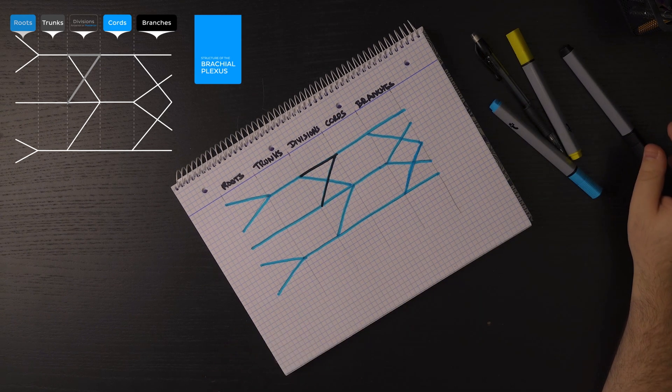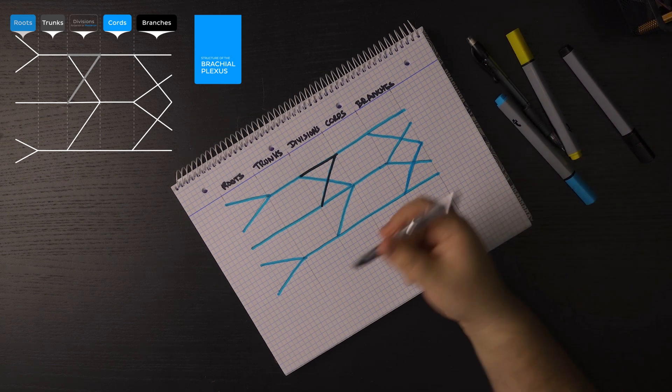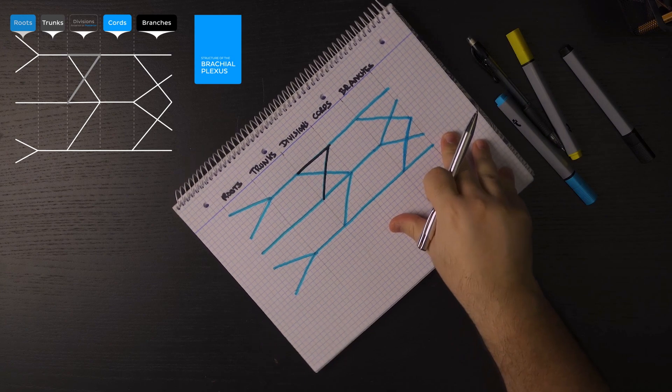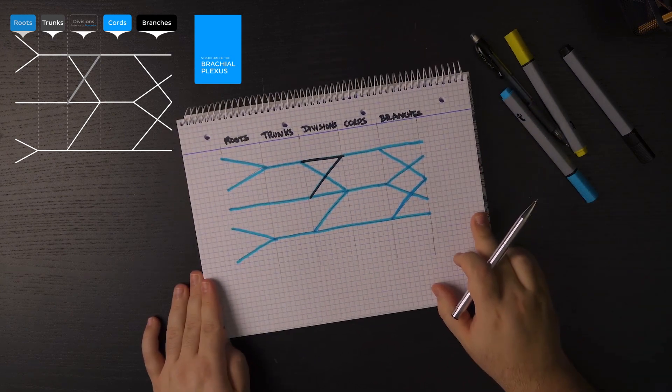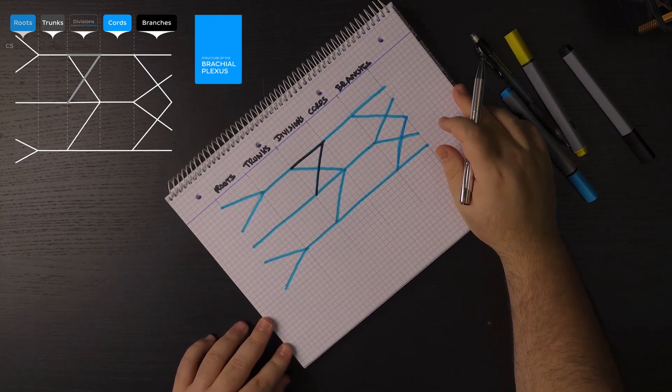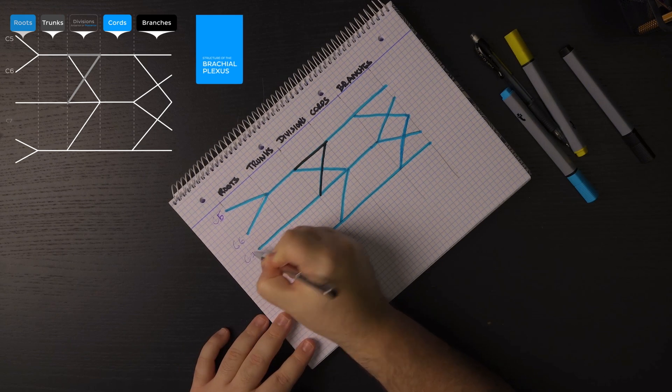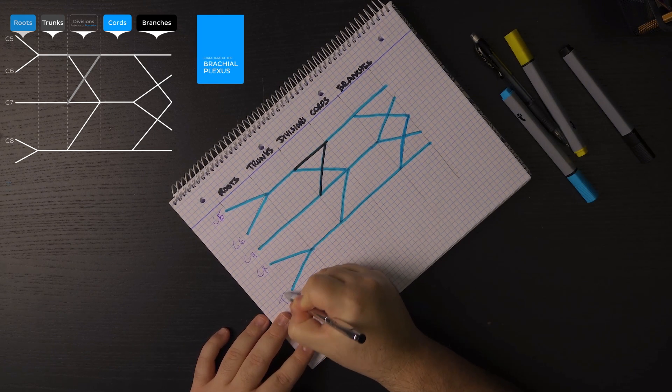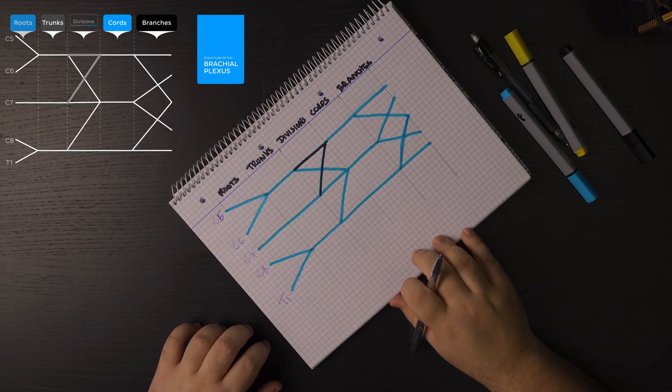So now it is time for us to label our structures here. I'm just going to use a pen here. And the first structures we're going to be labeling then are our roots. And we start then from roots. So C5, C6, C7, C8, and T1. So we have our roots here for the brachial plexus.